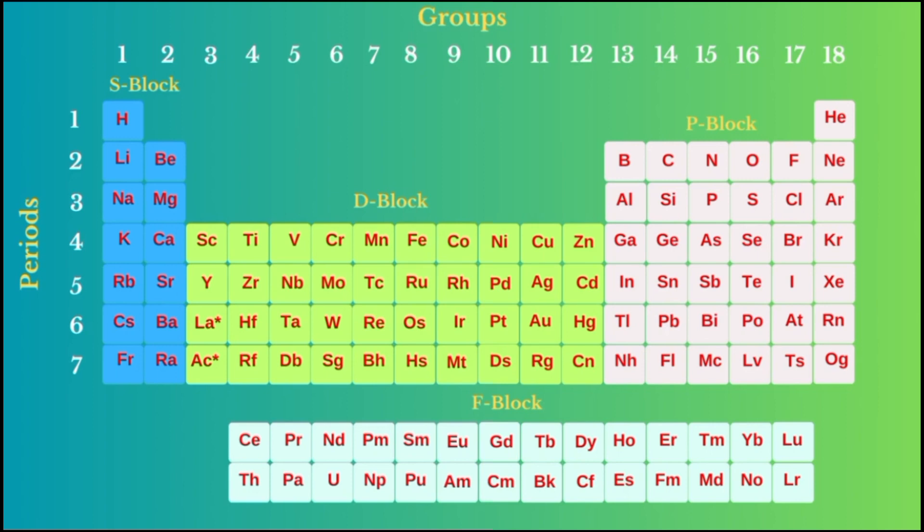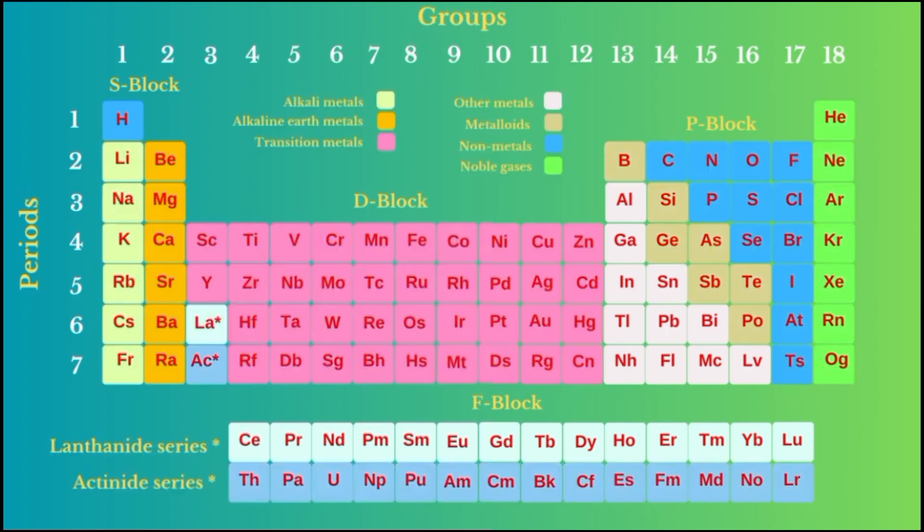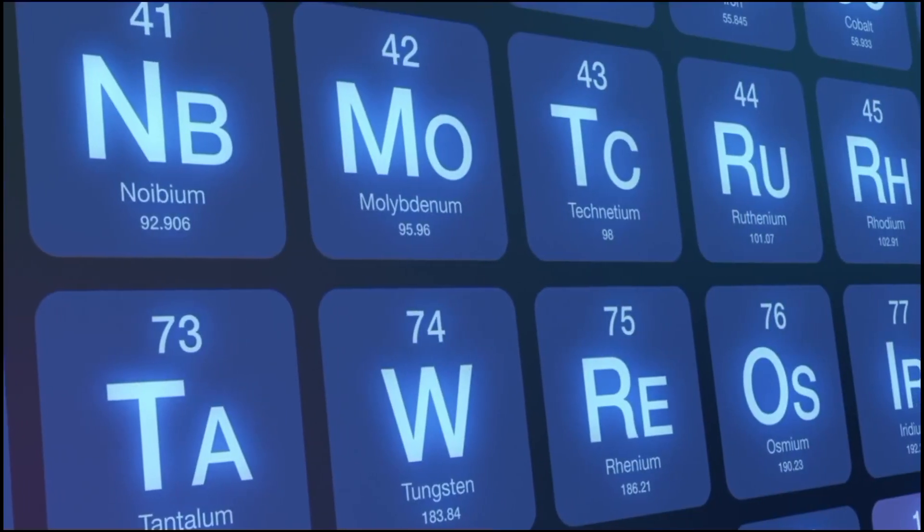F block: this block is further split into the lanthanides and actinides series. Lanthanides (57-71) and actinides (89-103) have their outermost electrons in the F orbital.